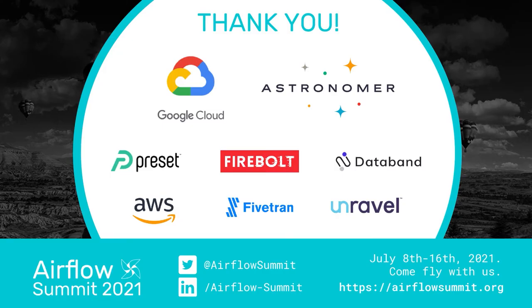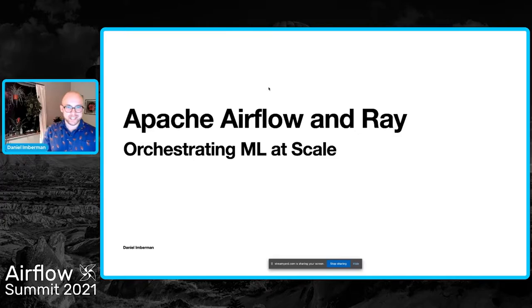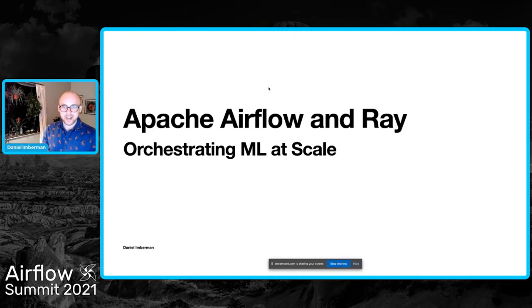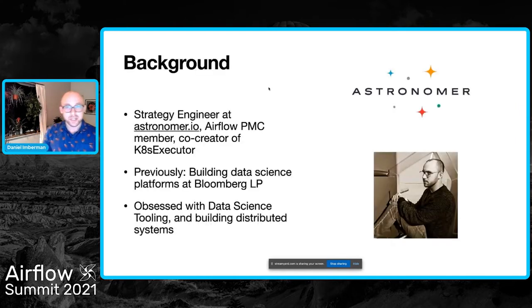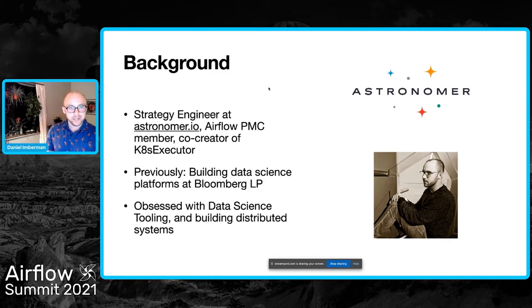My name is Daniel Imberman. I'm really excited to give this talk. For visual reference, I am a white male with large square glasses and a shaved head with a slight beard. This is Apache Airflow and Ray: orchestrating ML at scale. My name is Daniel Imberman. I am a strategy engineer at astronomer.io, a member of the Airflow PMC, and a co-creator of the Kubernetes executor and Kubernetes pod operator.